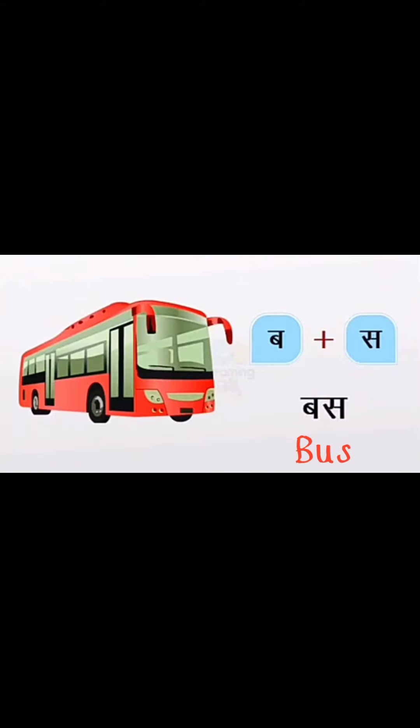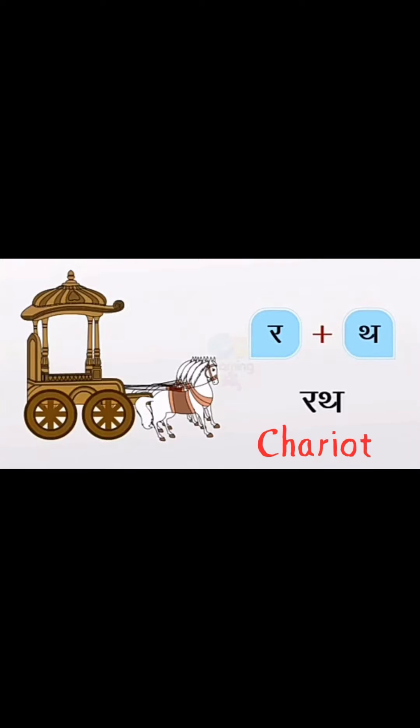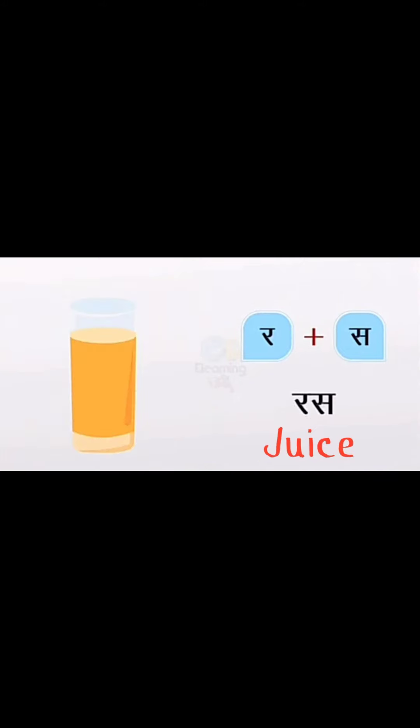Ba plus Sa — Bus. B-U-S. Bus. Ra plus Ta — Rad. C-H-A-R-I-O-T. Chariot. Ra plus Sa — Rus. J-U-I-C-E. Juice.